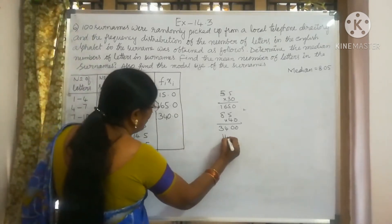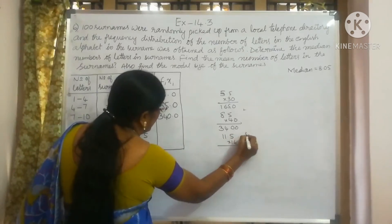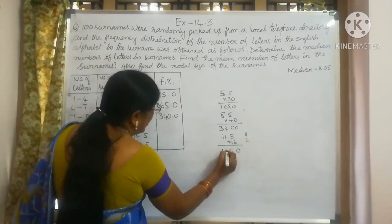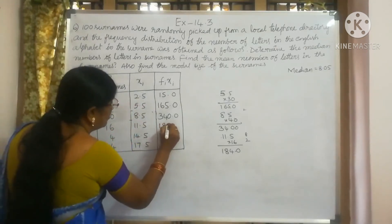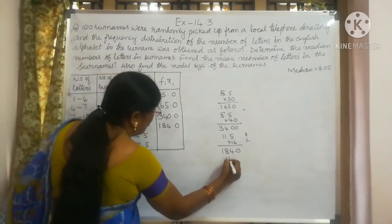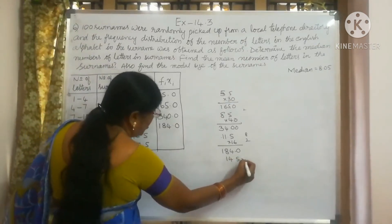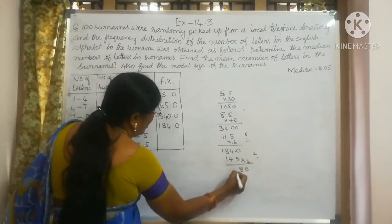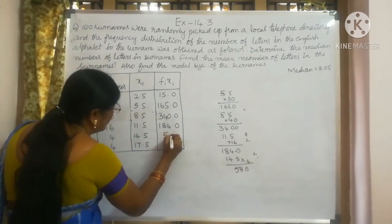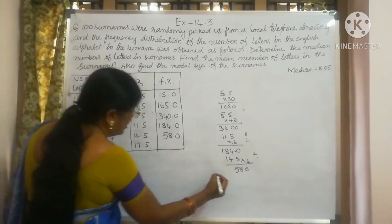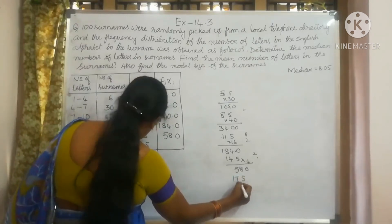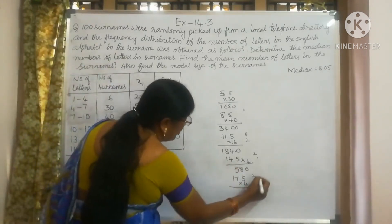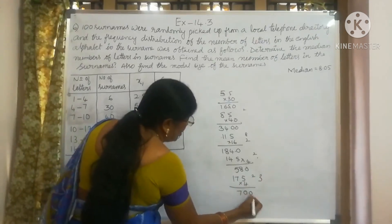Now, 11.5 into 16 gives 184. And 14.5 into 4 — working through the multiplication — gives 58. And 17.5 into 4 gives 70.